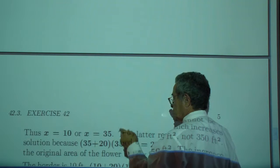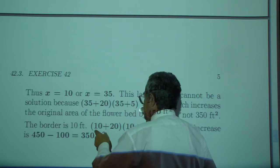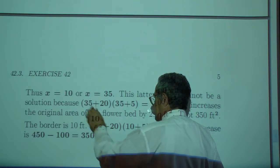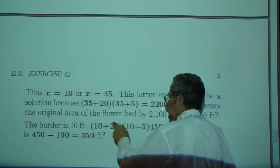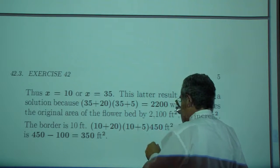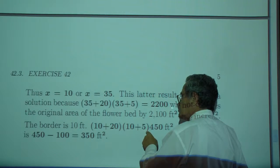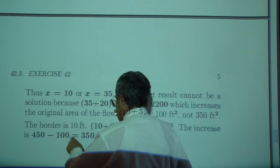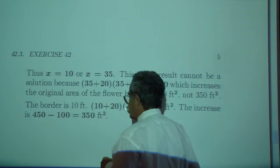So the border is, we have 10 feet total, 5 feet on either side. So 20 plus 10 and 5 plus 10, which is supposed to be 450. There's an equal sign missing here. And 450 minus 100 is indeed 350.